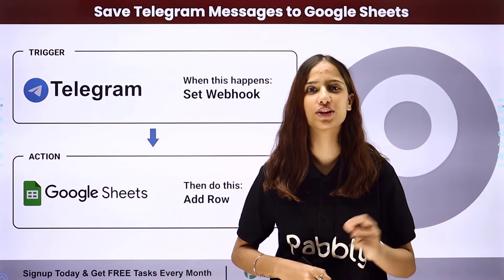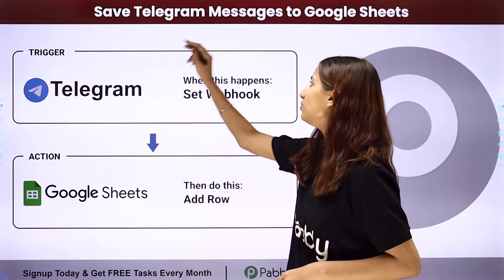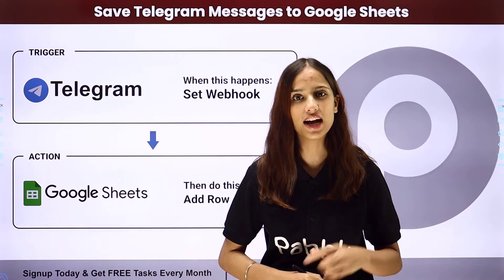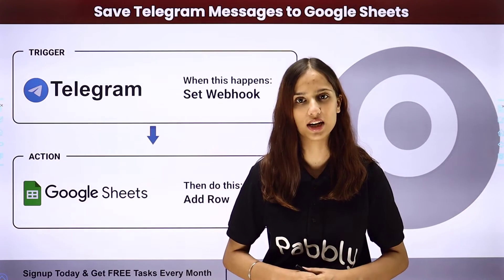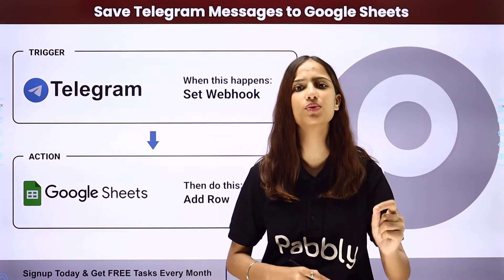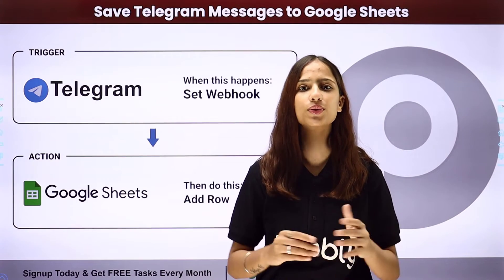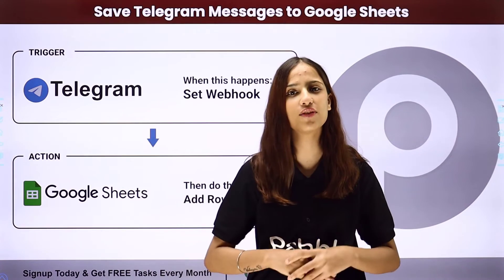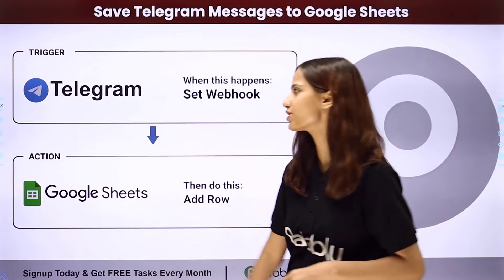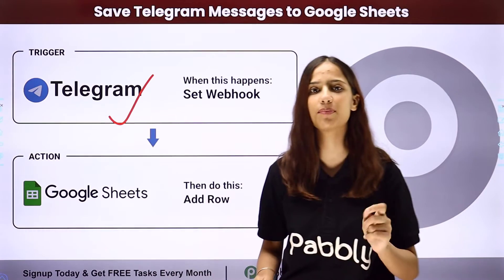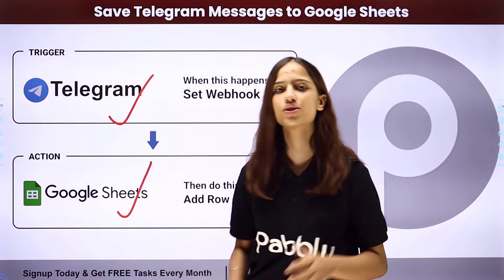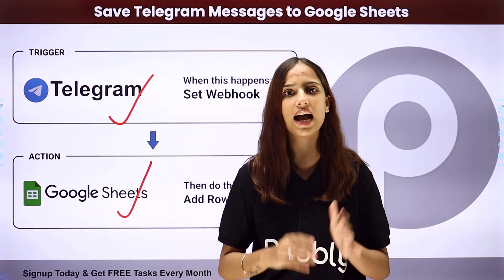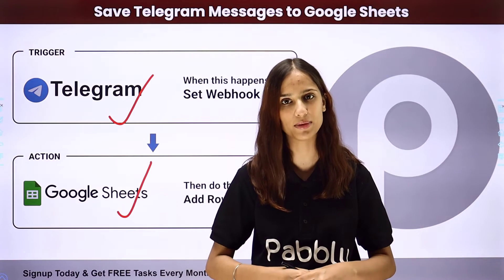Hello everyone, welcome back to Pabbly. In today's video we will understand how to save Telegram messages to Google Sheets. Whenever I receive a new message in Telegram, I want to add the same message into my Google Sheets in a new row. To do this, I need to build an integration between these two applications using Pabbly Connect, where my trigger application will be Telegram and my action application will be Google Sheets.